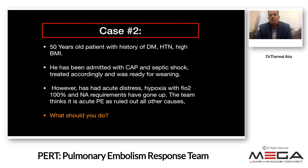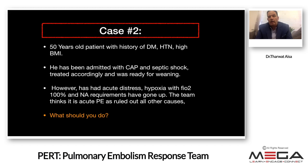The second scenario: a 50-year-old patient with diabetes, hypertension, and high BMI, admitted with community-acquired pneumonia and septic shock, treated accordingly and ready for weaning. However, he developed acute respiratory distress, became hypoxemic, with increasing oxygen and noradrenaline requirements. The team suspects acute pulmonary embolism after ruling out other causes. What should you do? Is it sensible or safe to send him down for CT? Maybe you'd thrombolyze him, or maybe you need more workup.